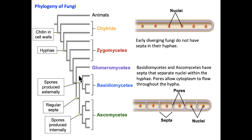A distinguishing morphological feature of fungi is the presence of hyphae. Hyphae are long straw-like structures capped at each end and containing multiple nuclei. In the more derived forms of fungi, the hyphae have a very different appearance — they have septa, or small walls, that isolate nuclei into different compartments, with pores that allow the free flow of cytoplasmic materials from one compartment to the next.